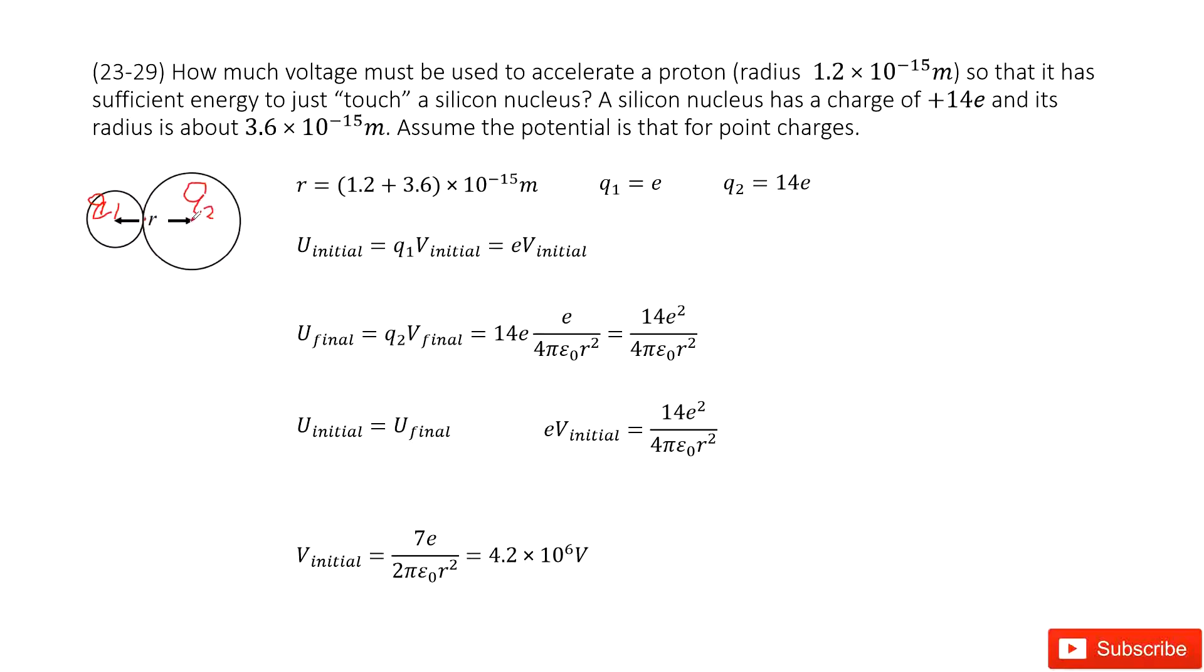So the distance between these two particles is just the radius from the proton plus the radius from the nucleus. The distance is given, and Q1, Q2, the charges, are given.